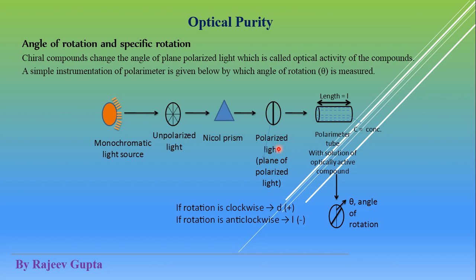When this plane polarized light passes through the solution of an optically active or chiral compound, the angle of rotation changes. We can see that the angle of this plane polarized light changes when it passes through the polarimeter tube, which contains a specific concentration of that optically active substance and has a specific length. If rotation is clockwise, we assign it as small d or plus — that is dextrorotatory. If its rotation is anticlockwise, we assign it L or minus, which is levorotatory. Using this polarimeter instrument, we check the optical activity of a chiral compound.